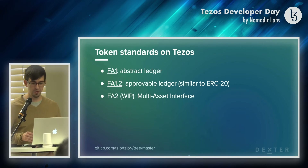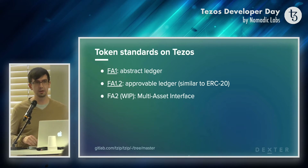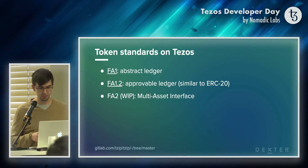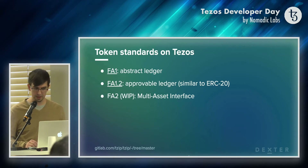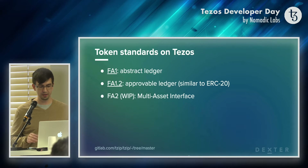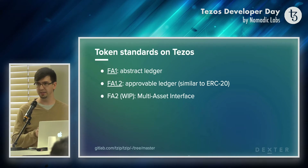Before getting into Dexter directly, we need to talk about what tokens are available on Tezos. We already mentioned XTZ — these are the native tokens of Tezos. But you can use smart contracts to create new tokens that exist on Tezos. The first token standard is called FA1 and it's an abstract ledger. What that means is you define a total number of tokens that exist and you allow individuals to send and receive tokens. I could create a token, send it to any existing Tezos address, and you could become the owner of those and then send them as you please.